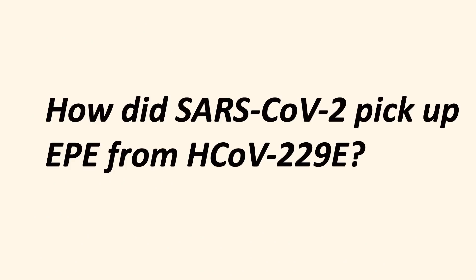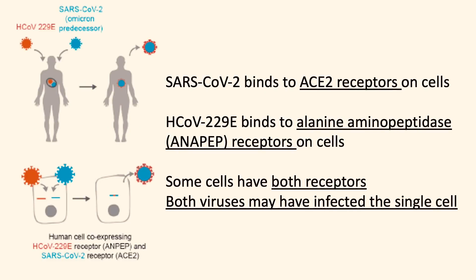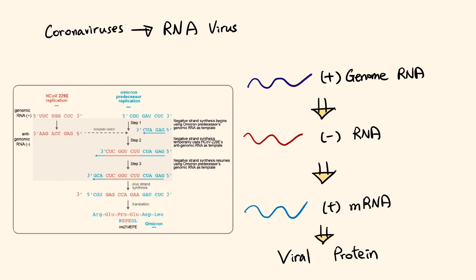So how did the SARS-CoV-2 coronavirus pick up a piece of gene from 229E? The authors of the study proposed that an individual may have been co-infected with both coronaviruses simultaneously. Some human cells carry the ACE2 receptor — a receptor for the SARS-CoV-2 virus to gain entry — and at the same time can also have a different receptor called the alanine aminopeptidase receptor for the 229E coronavirus to gain entry as well. When a cell had two viruses at the same time, the SARS-CoV-2 virus might have accidentally picked up a small piece of RNA from the 229E.